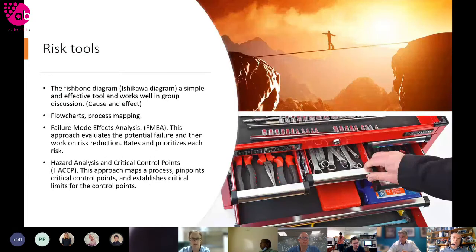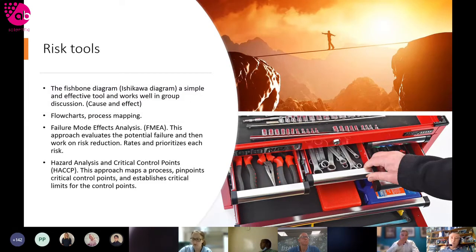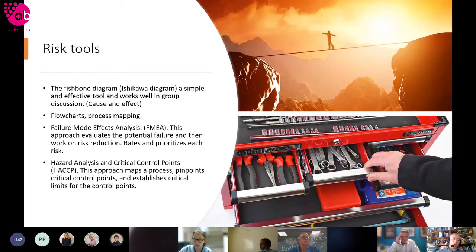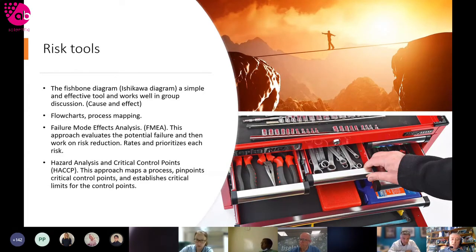There's an array of different risk tools: standard deconstruction tools used in root cause analysis such as the fishbone diagram, process flows and mapping, and failure modes and effects analysis (FMEA), which is very useful for examining what could go wrong with an item of equipment. Hazard analysis and critical control points (HACCP) is the most useful method to apply to environmental monitoring, because it allows maps of the process to be constructed, pinpoints the critical control points, and allows appropriate limits to be set in relation to different types of contamination.